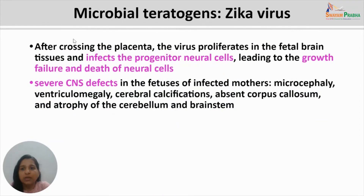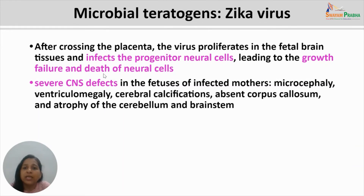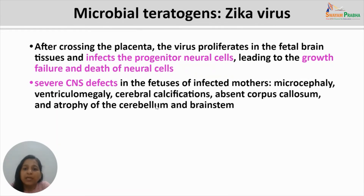Zika virus is able to cross the placenta and proliferates in fetal brain tissues, infecting progenitor neural cells and leading to their growth failure and death. This causes central nervous system defects in the fetus, with symptoms including microcephaly, ventriculomegaly, cerebral calcifications, absent corpus callosum, atrophied cerebellum, and improperly developed brain stem.